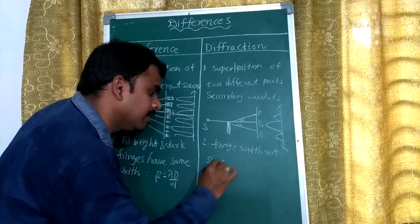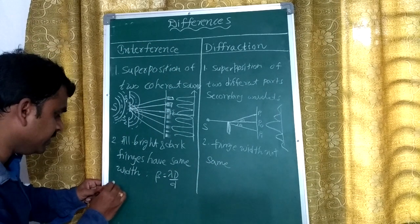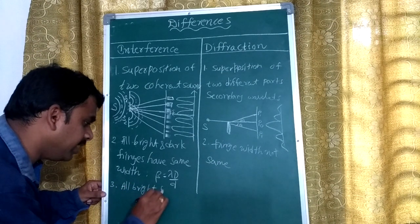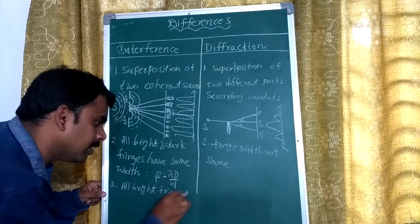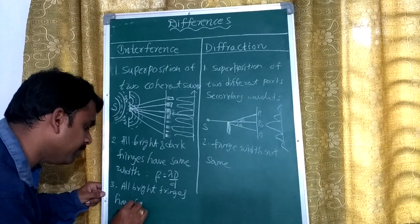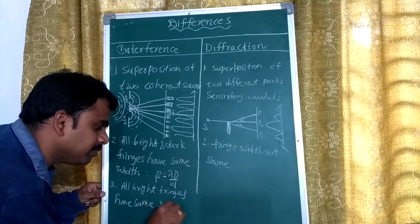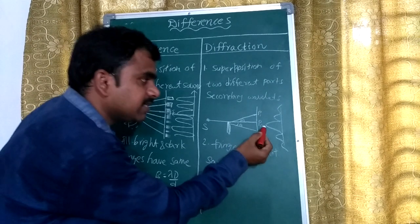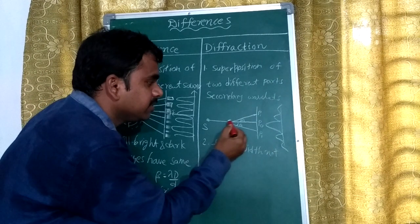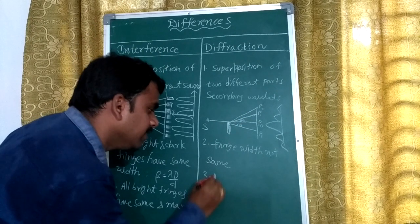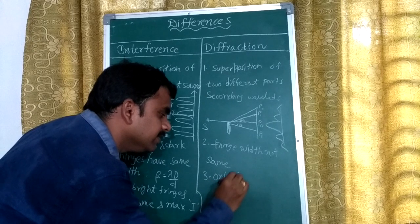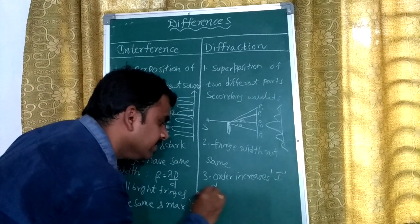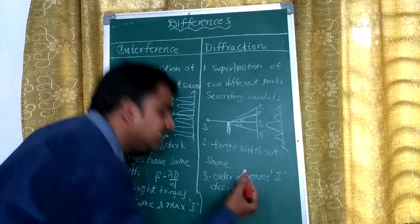The third point: in interference, all bright fringes have the same and maximum intensity. In diffraction, this is the zero order, first order, second order — as the order increases, the intensity decreases. Due to that, we observe shadow regions.